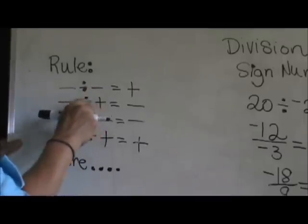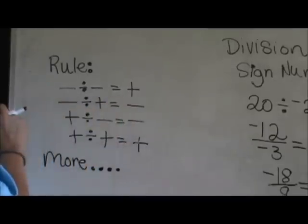Negative divided by a positive—this negative doesn't have a pair, therefore the answer is negative.